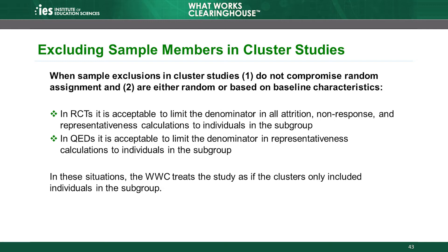In this case, when assessing whether the students in the sample are representative of the classrooms, the WWC is only interested in whether they are representative within the remaining sample. A sample exclusion can affect the attrition, non-response, and representativeness calculations in a cluster RCT, and can also affect the representativeness requirement in a cluster QED. When sample exclusions meet these requirements, reviewers should treat the study as if the only individuals in the clusters are those in the remaining sample.